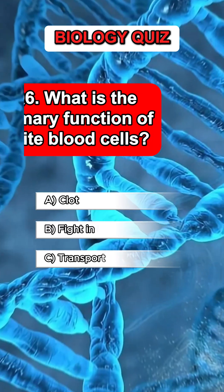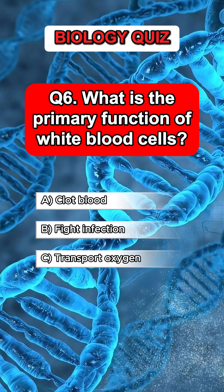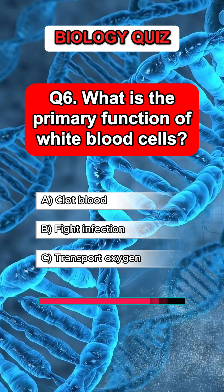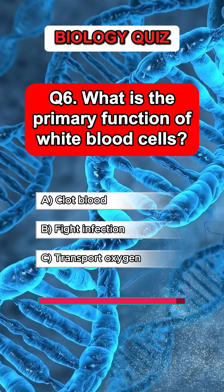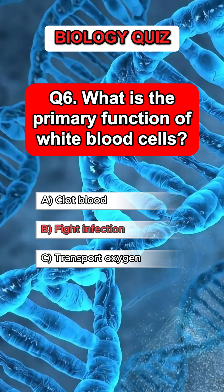Question 6. What is the primary function of white blood cells? Answer B. Fight infection.